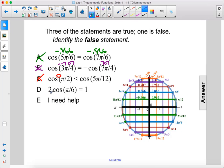Moving on. 2 times cosine π over 6 equals 1. This is false. So π over 6 is here, and π over 6 is also 30 degrees. 180 degrees divided by 6 is 30 degrees.